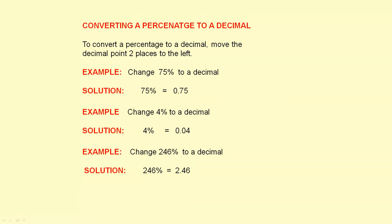Converting a percentage to a decimal. To convert a percentage to a decimal, move the decimal point two places to the left. Example: change 75% to a decimal. Here is your 75% — move the decimal point two places to the left, one, two — the decimal point will be here, so the answer is 0.75.